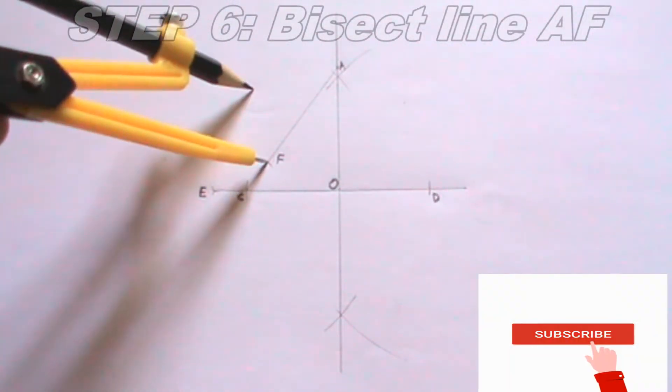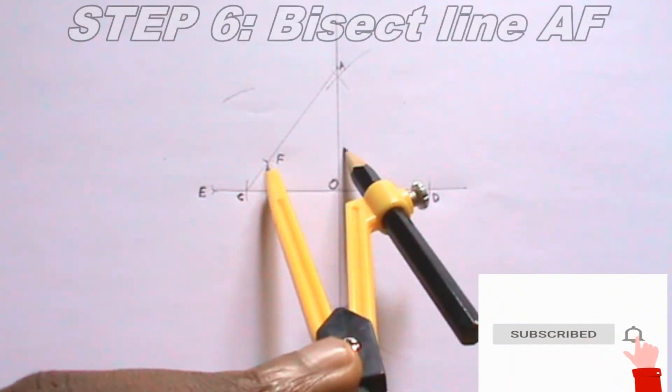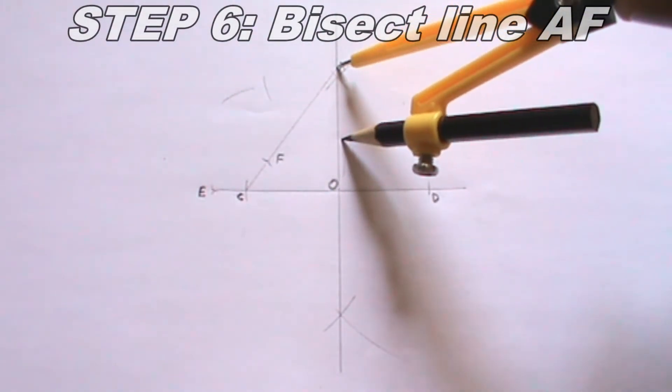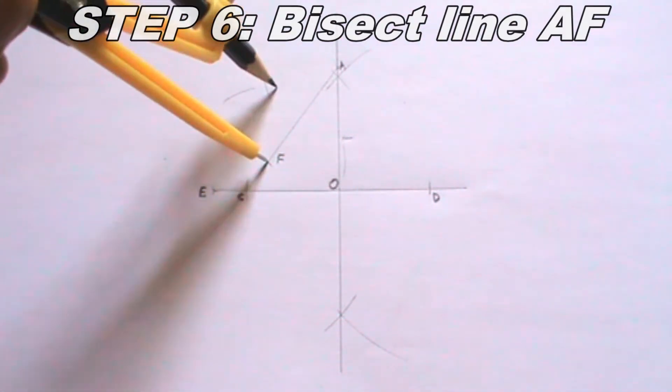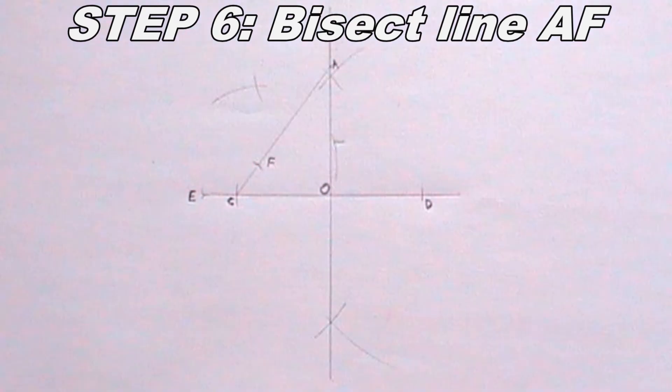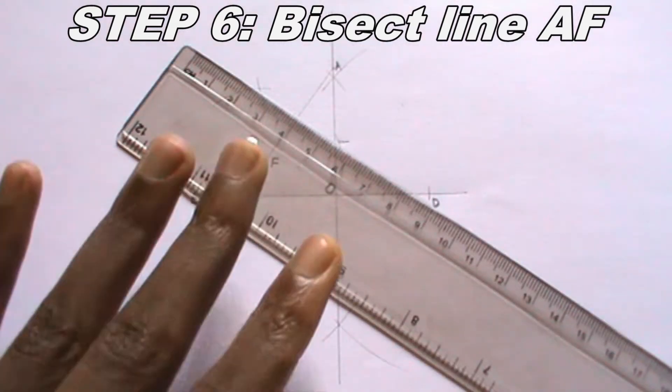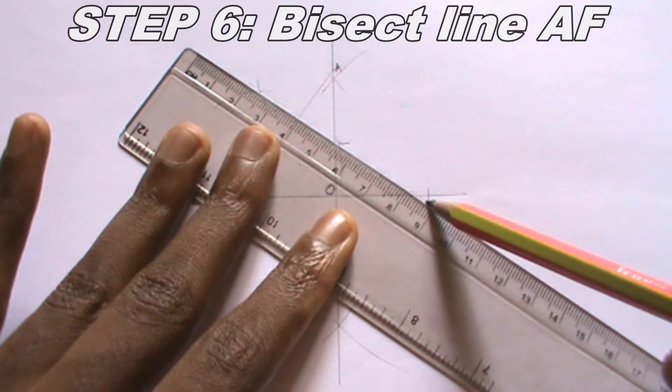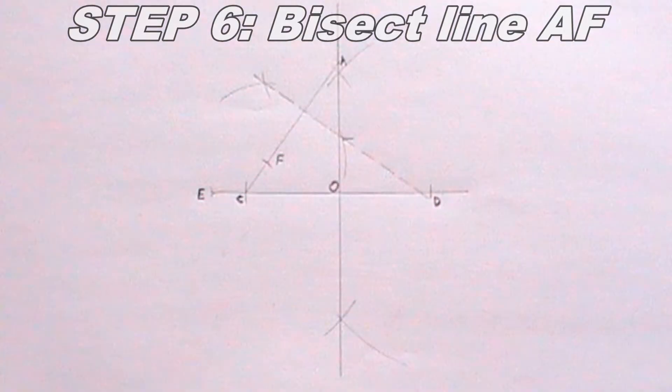The next thing I will do is to bisect line A F. I will now draw a line passing through the point where the arc intersects. This line should be thin dashes and should intersect line O D. Now I will name the point where the line intersects line O D, H.